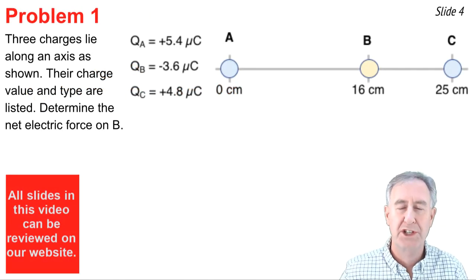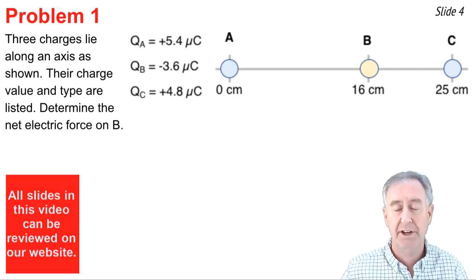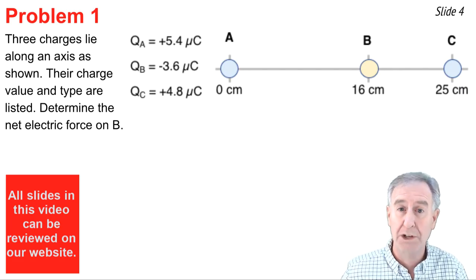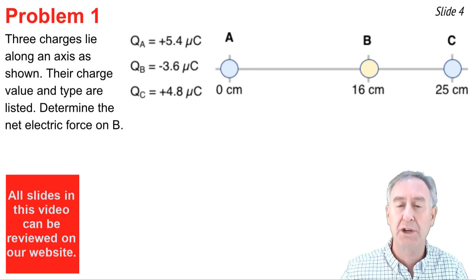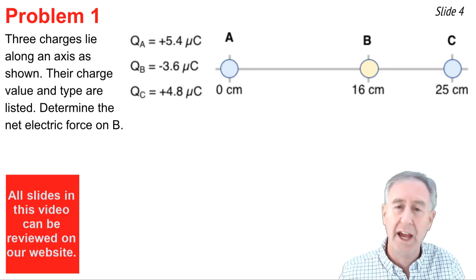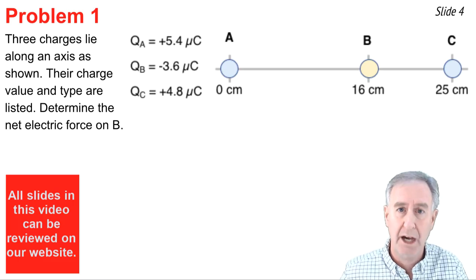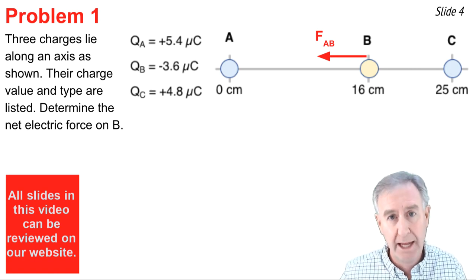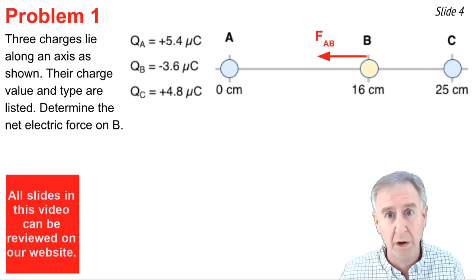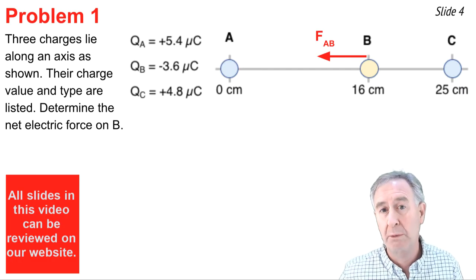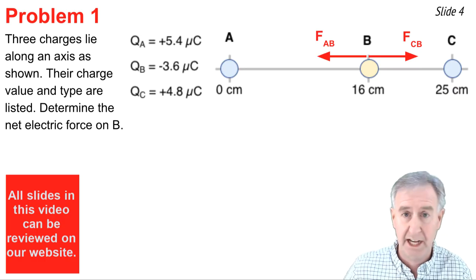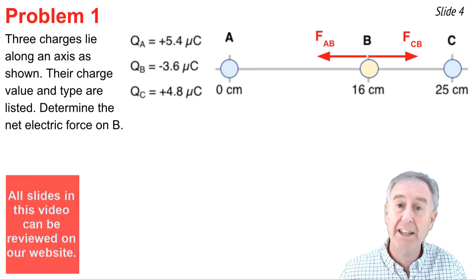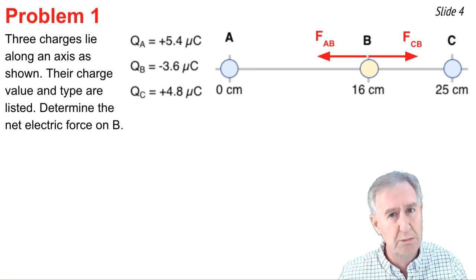The first problem involves three charges lying along a line, as shown. Their coordinates are given and the quantity of charge on objects A, B, and C are also given. We wish to determine the net electric force on charge B, the middle one there. To do so, I need to first figure out what are the individual forces acting upon charge B. First of all, A being oppositely charged of B will pull charge B to the left. I'm going to call this F of A on B and I've labeled it on the diagram with an arrow. Then there's the force of C pulling B to the right, that's FCB. I've shown that on a diagram. Now the net force is what you get when you find these two individual forces and add them together.